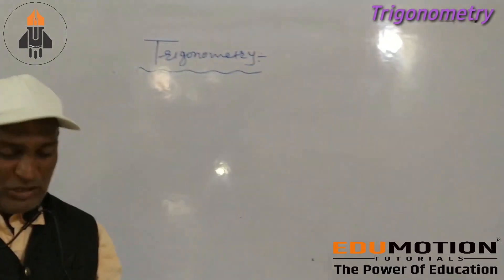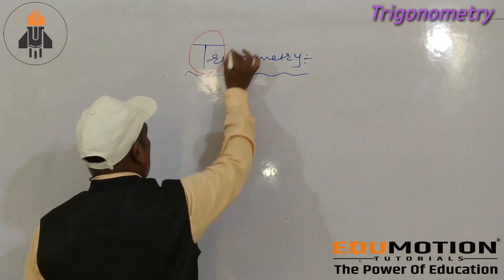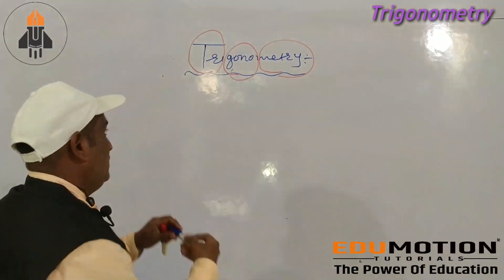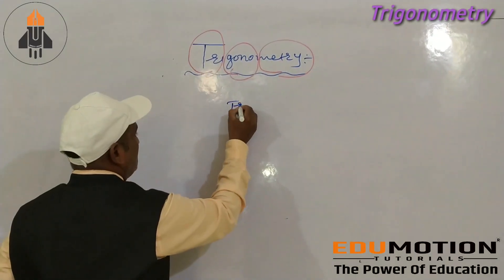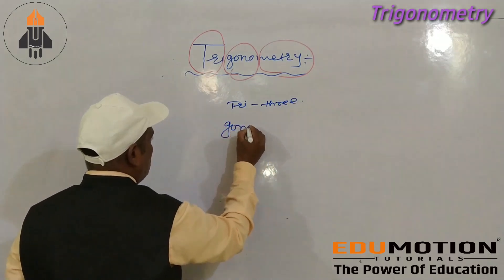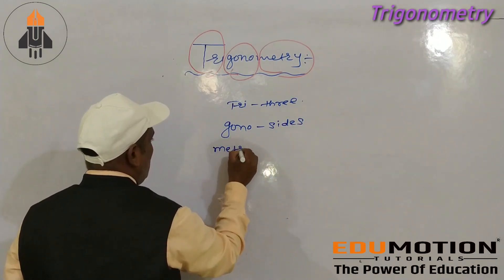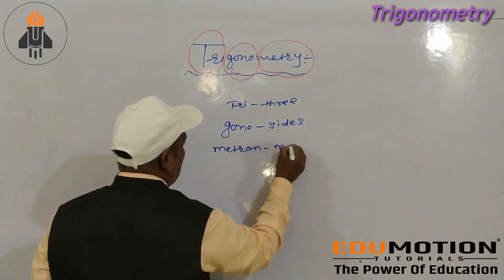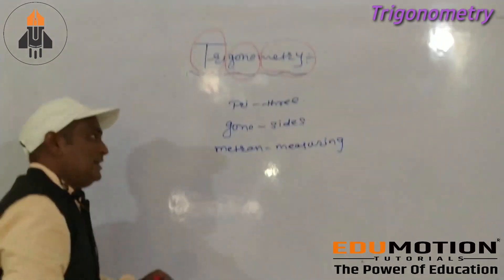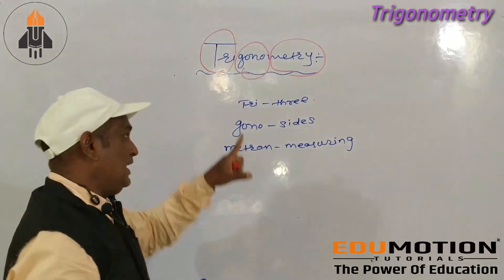What is the meaning of Trigonometry? This word has three parts: Tri, Gona, and Metron. Tri means three, Gona means side, and Metron means measuring. So the meaning of Trigonometry is three-side measurement.